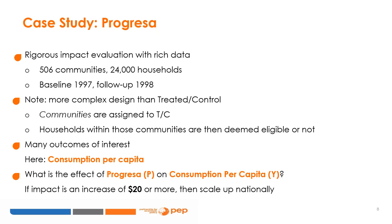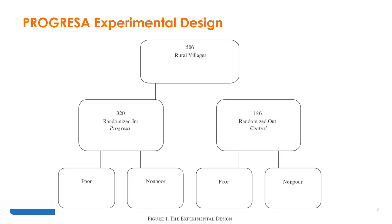The assignment was not done by household or individual, but at the level of the community. There are many outcomes of interest in the case of PROGRESSA, but we will concentrate on consumption per capita. The broad question is: what is the effect of PROGRESSA on consumption per capita? Let us say the government has a target that the program will be scaled up nationally if its impact is an increase of 20 pesos or more on beneficiaries' consumption per capita. The PROGRESSA experimental design was deployed in 506 rural villages, of which 320 were randomized into PROGRESSA and 186 were randomized out, becoming the control group.